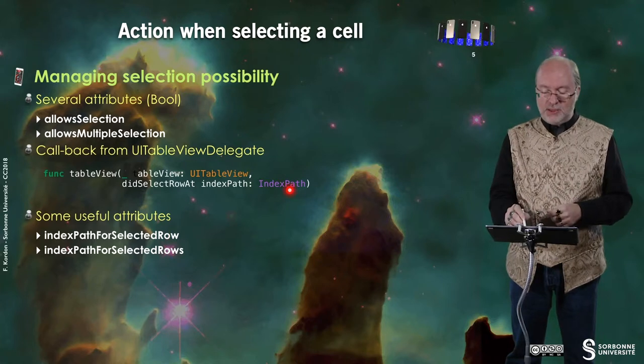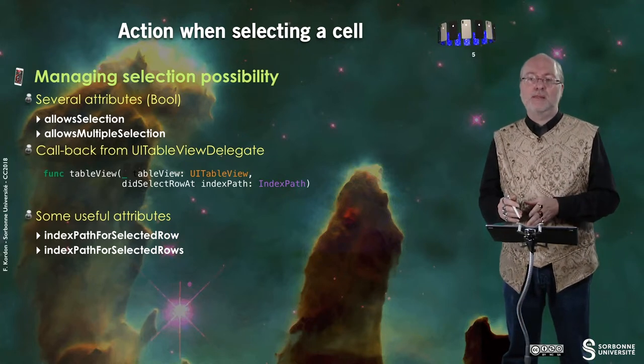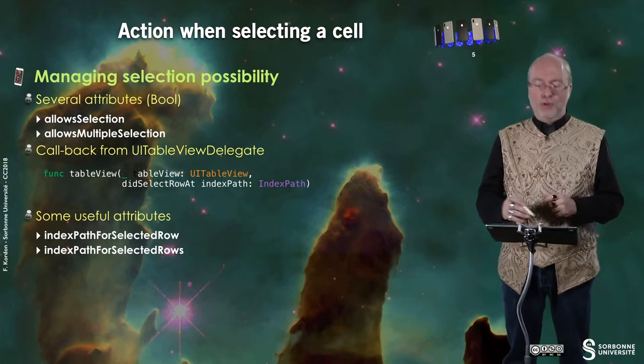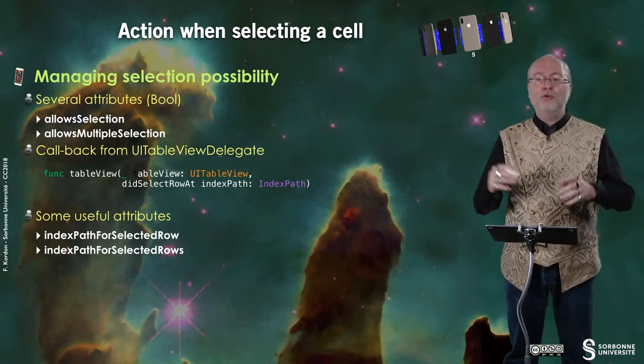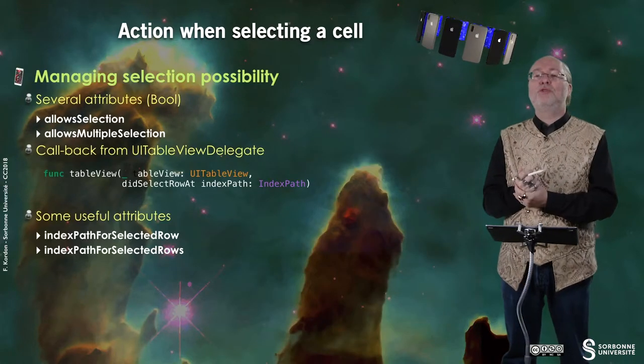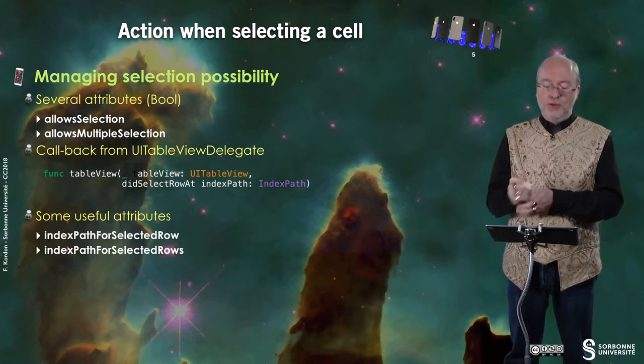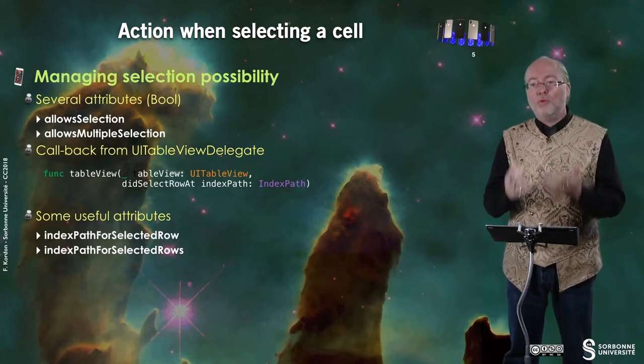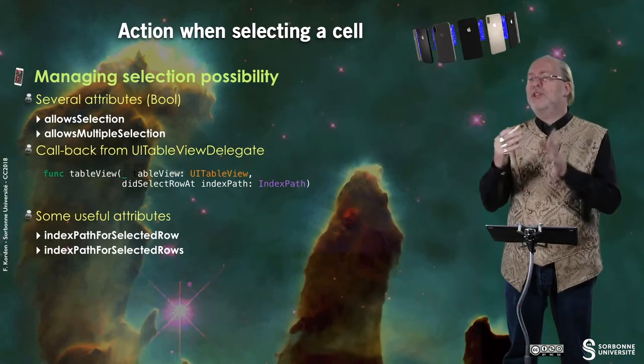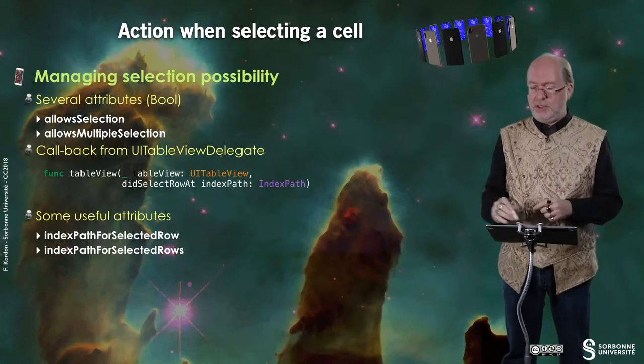Here you have an index path, here you have an array of index paths. These attributes are useful when you use them after a while — for example, after your user has tapped the action button. In that situation you allow multiple selections, then you can check which cell is selected. So there are several ways to associate actions to information displayed in the UI TableView.